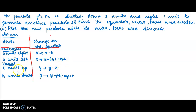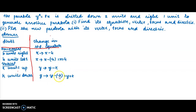Similarly, vertical up means positive — replace y by y minus k. Vertical down means negative — replace y by y minus (−k), which is y plus k.